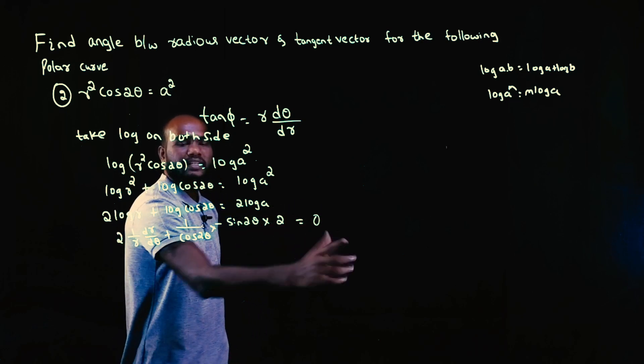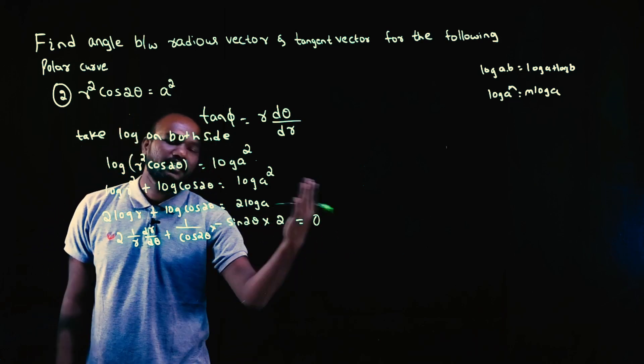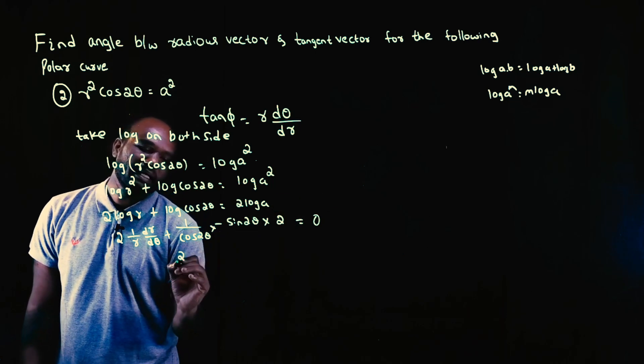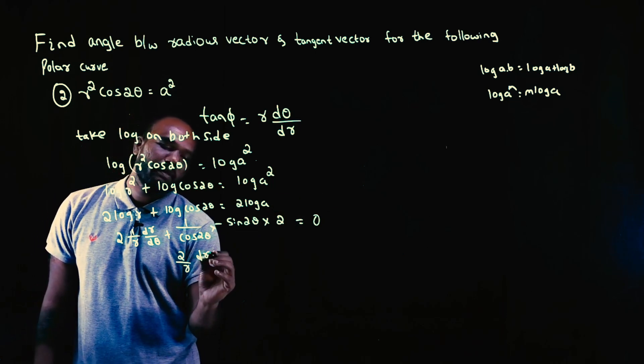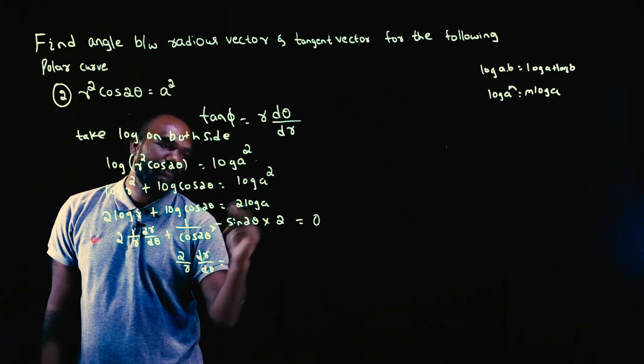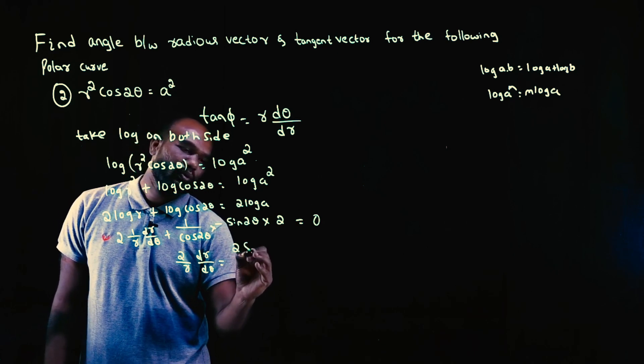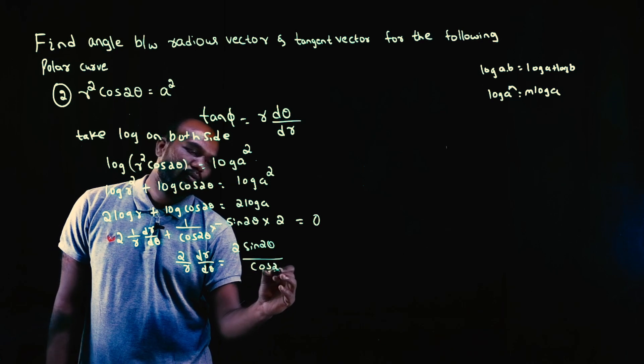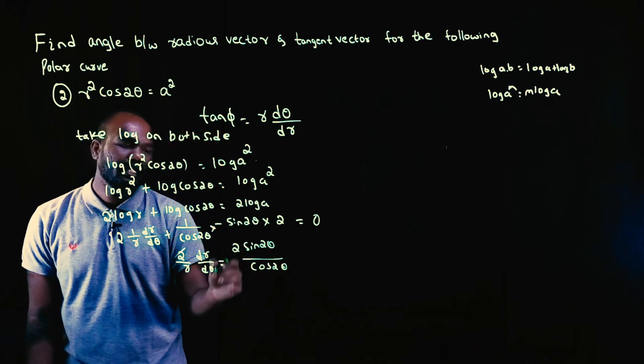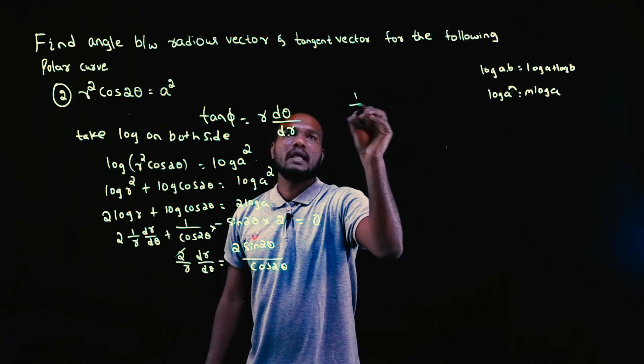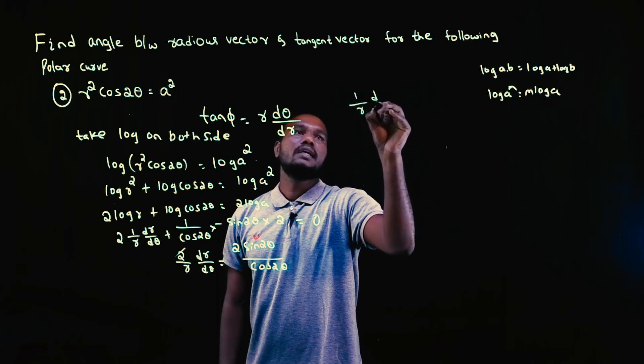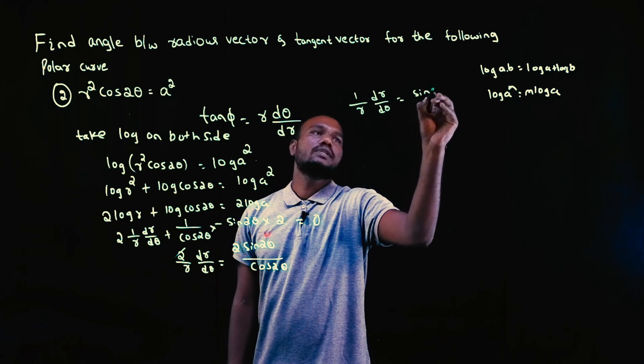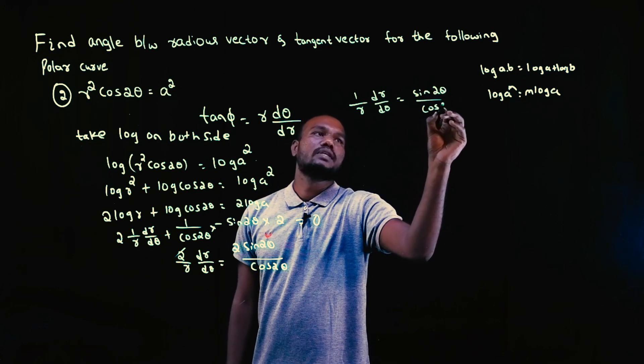Plus into minus is minus. If I take that, this will become positive. So (2/r)(dr/dθ) minus 2 sin(2θ)/cos(2θ). The 2s cancel out. So what I'm left with: (1/r)(dr/dθ) equals sin(2θ)/cos(2θ).